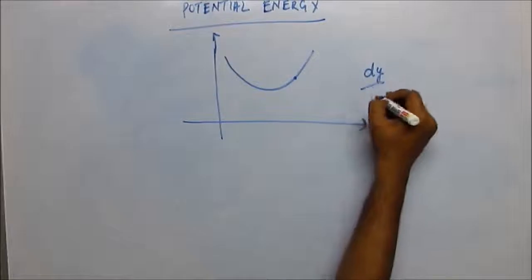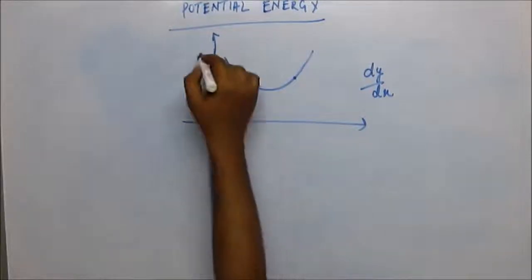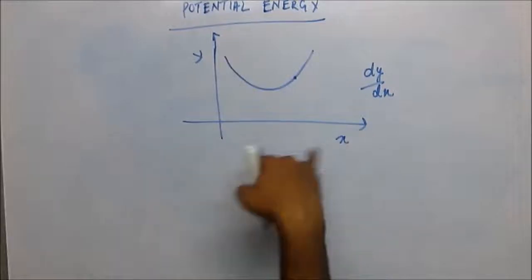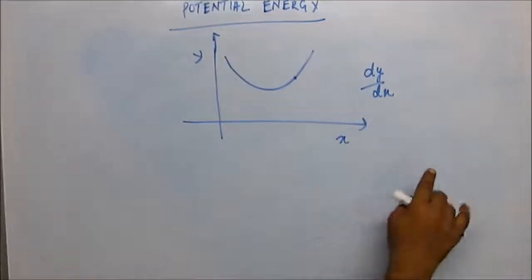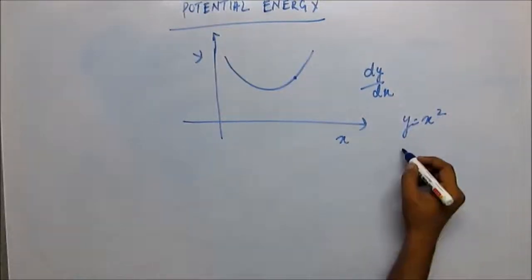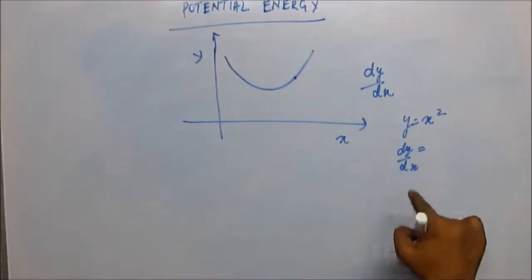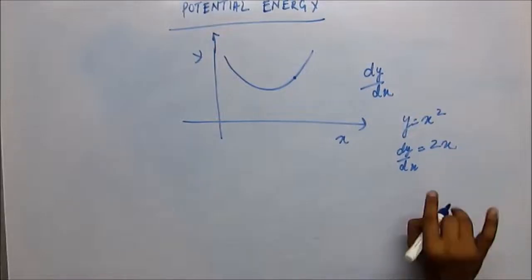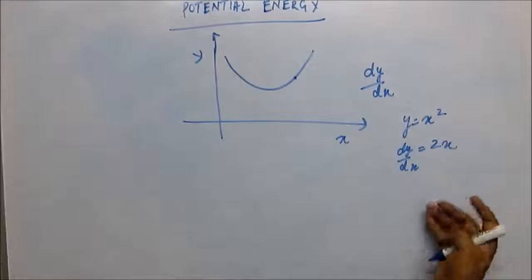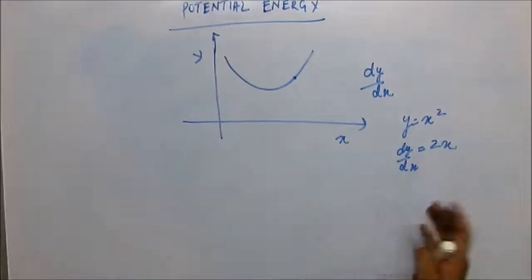For any graph of this kind, dy/dx is actually the slope of the tangent at that point. So if I have y and x on a graph and consider a simple equation y = x², then dy/dx = 2x. At x = 2, dy/dx = 4; at x = 1, it is 2. At any point you can find what dy/dx is.